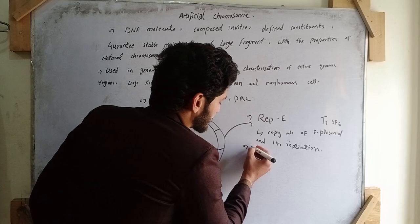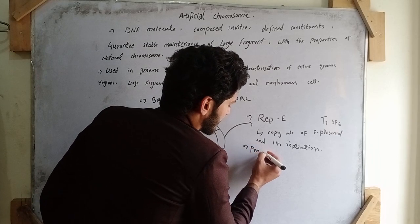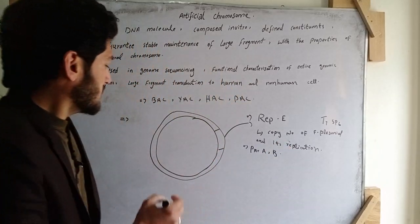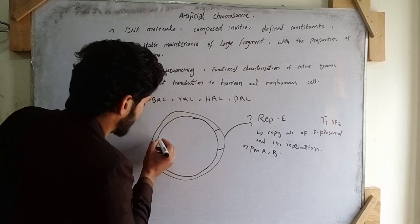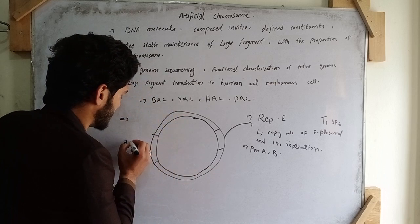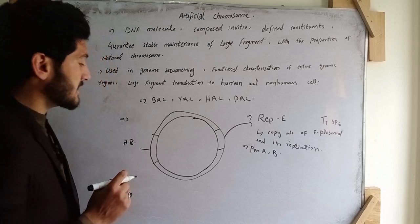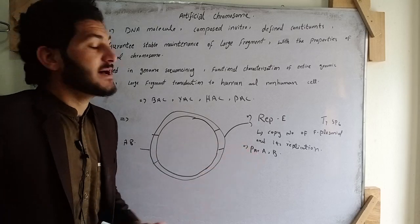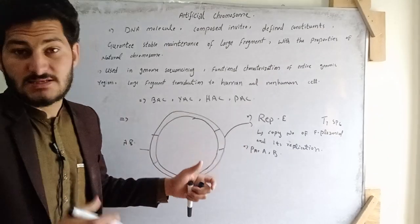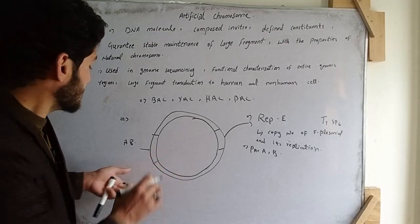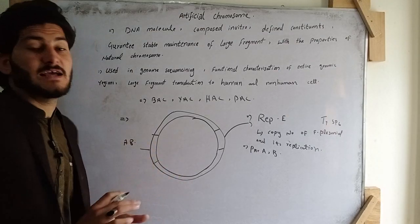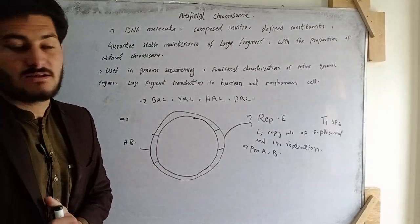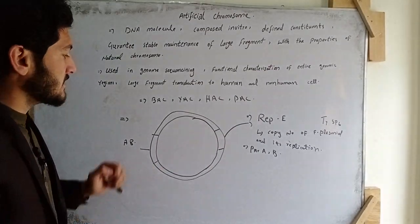The second part is parA and parB. This region controls the transformation of a plasmid during cell division — it helps in transferring the plasmid to daughter cells during the cell division process.